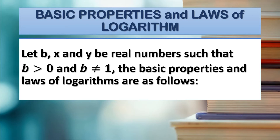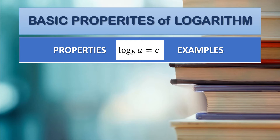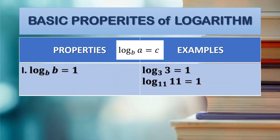The basic properties of logarithms. First, let b, x, and y be real numbers such that b is greater than 0 and b is not equal to 1. The basic properties of logarithms are as follows. Here are the basic properties, with their properties and corresponding examples. We're going to use the exponential expression form for reference. Property 1: we have the log of b with base b.